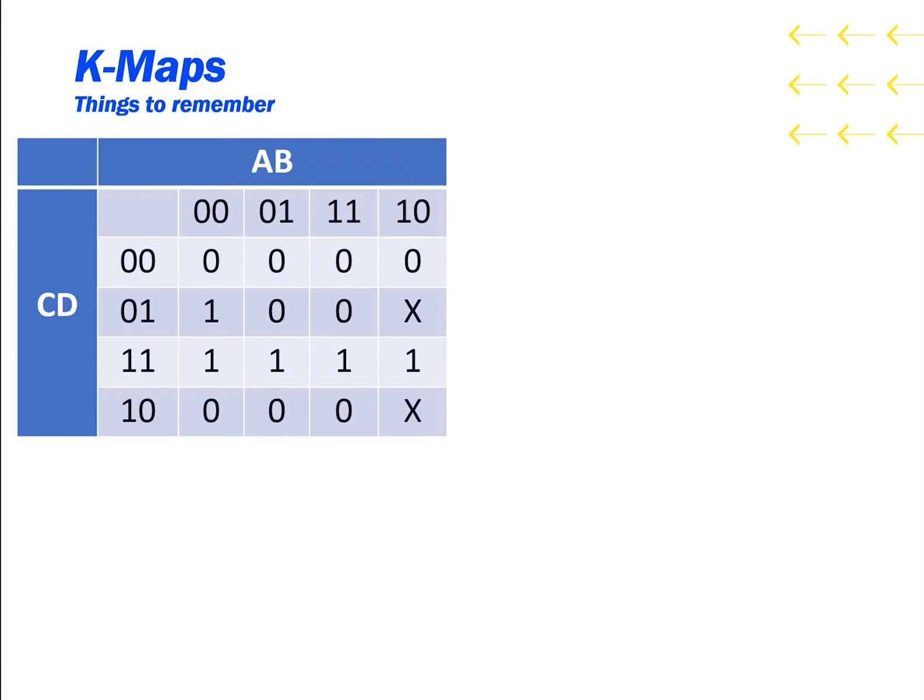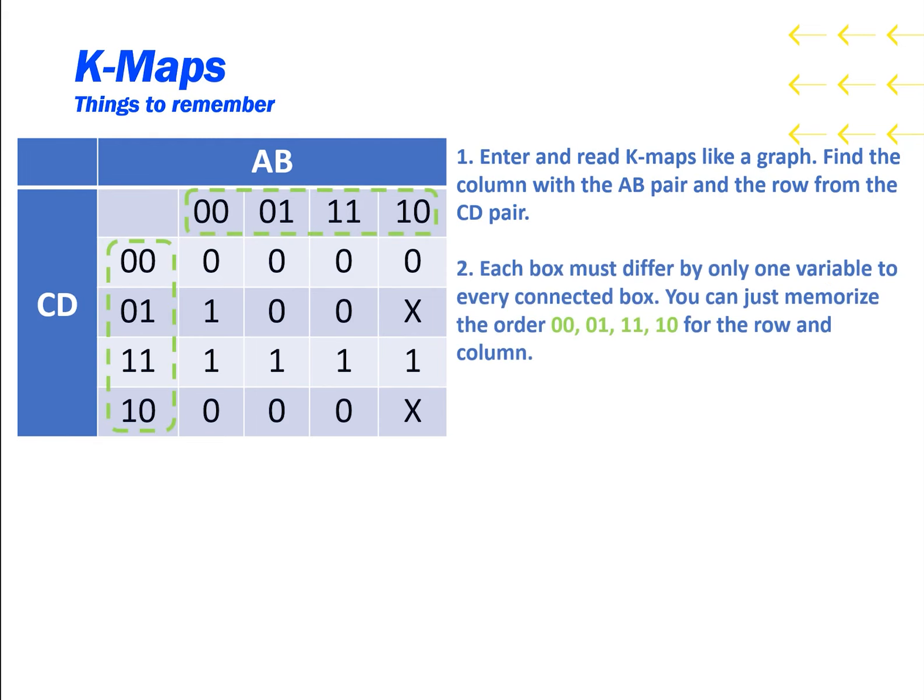So some key things to remember from this presentation. Enter and read K-maps like a graph. Find the column with the AB pair and the row from the CD pair. Each box must differ by only one variable to every connected box. You can just memorize the order 00, 01, 11, and 10 for the row and columns.